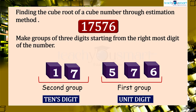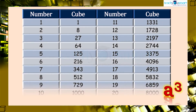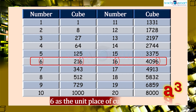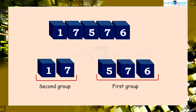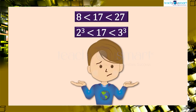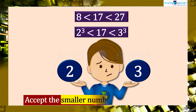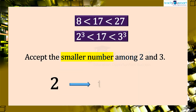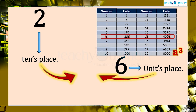The number 576 ends in 6. We know that 6 comes at the unit place of a number only if its cube root also ends in 6. So, we get 6 as the unit place of the cube root. In the second group, the number 17 lies between 8 and 27 — that is, between 2 cubed and 3 cubed. We accept the smaller number among 2 and 3, so 2 will be in the tens place.